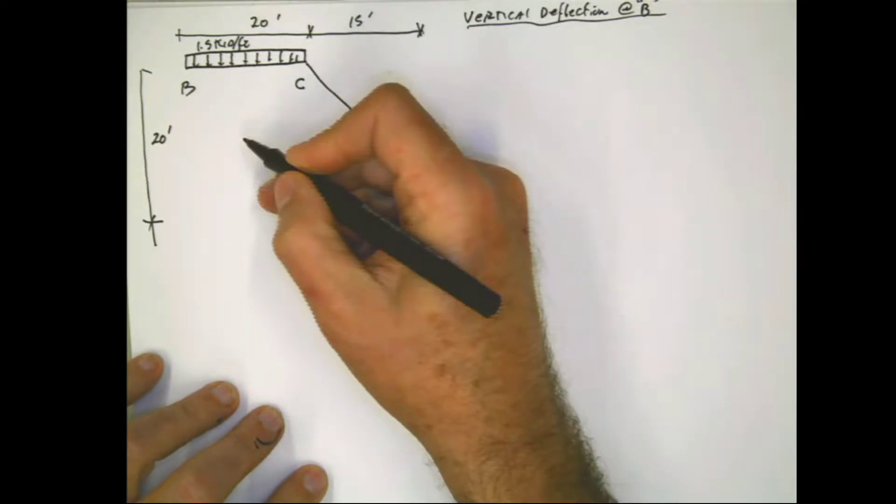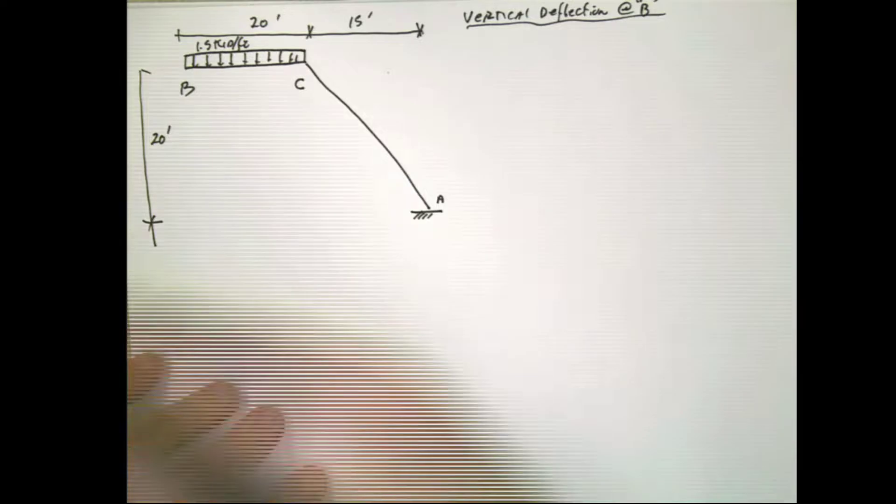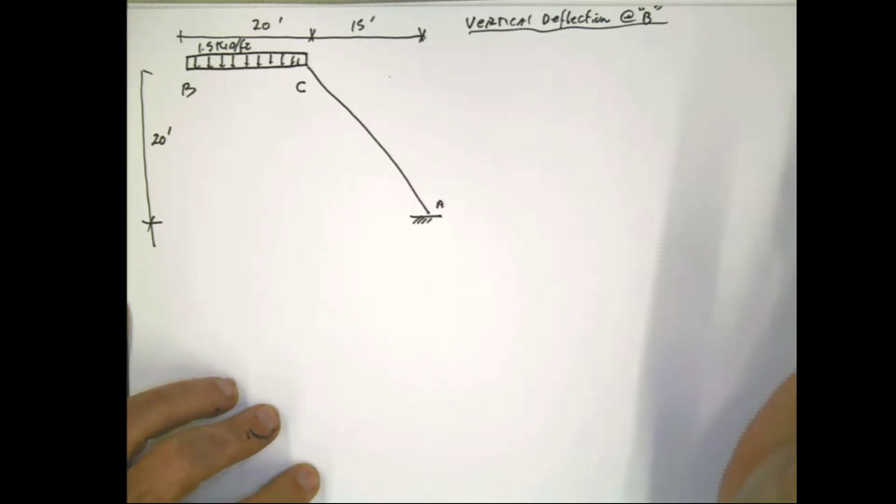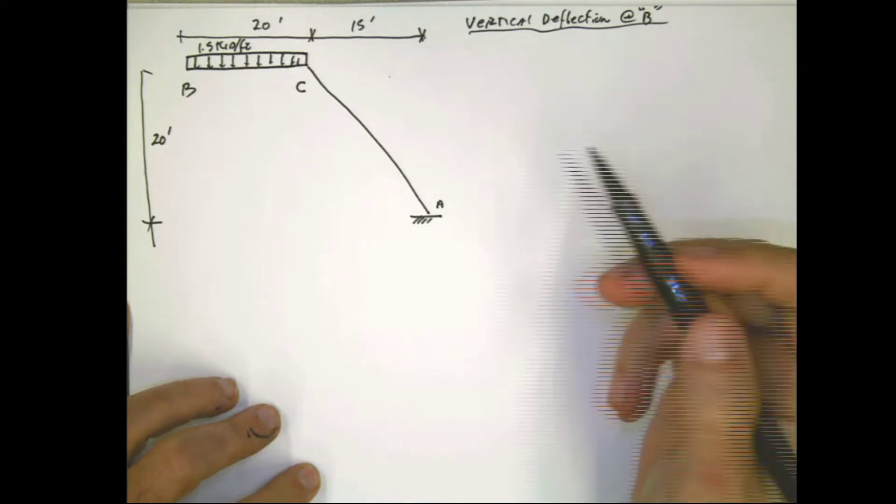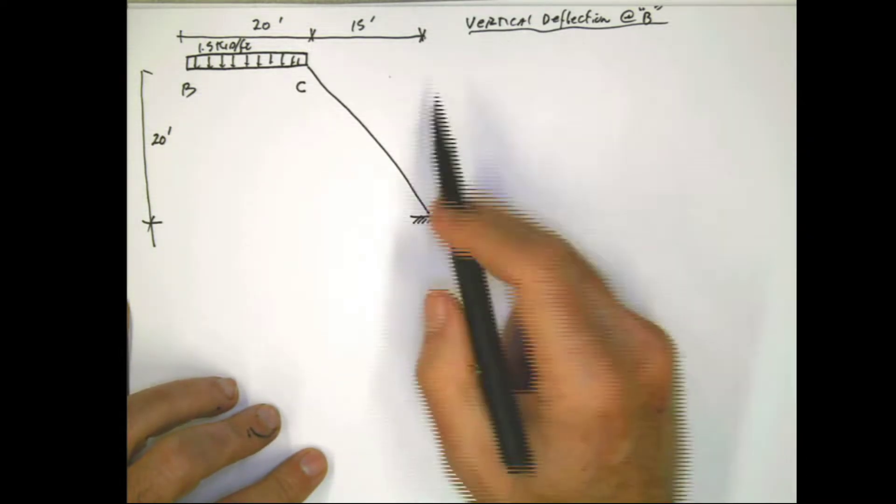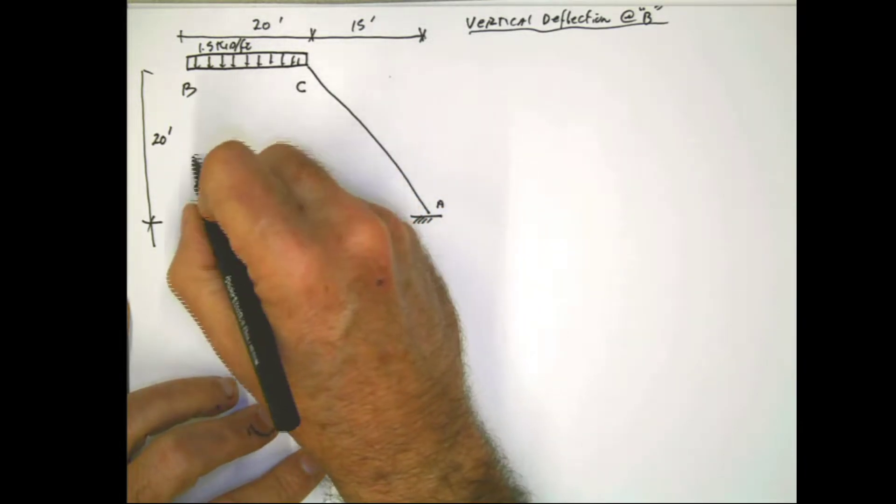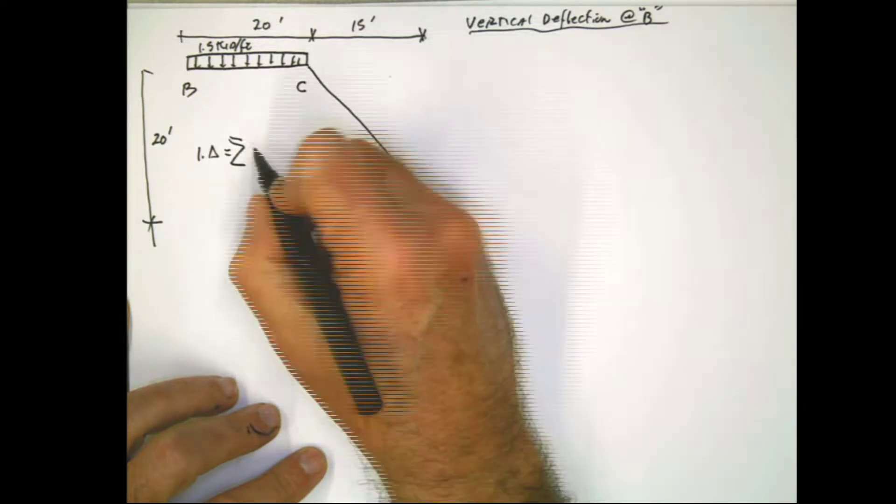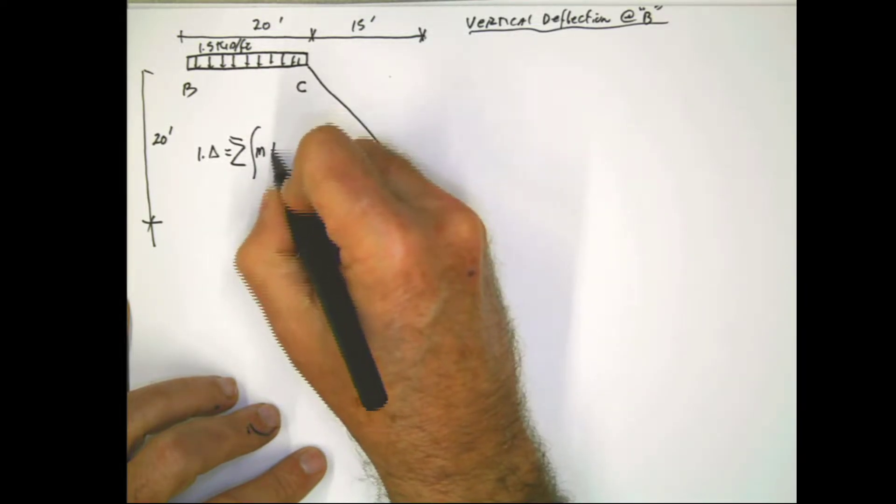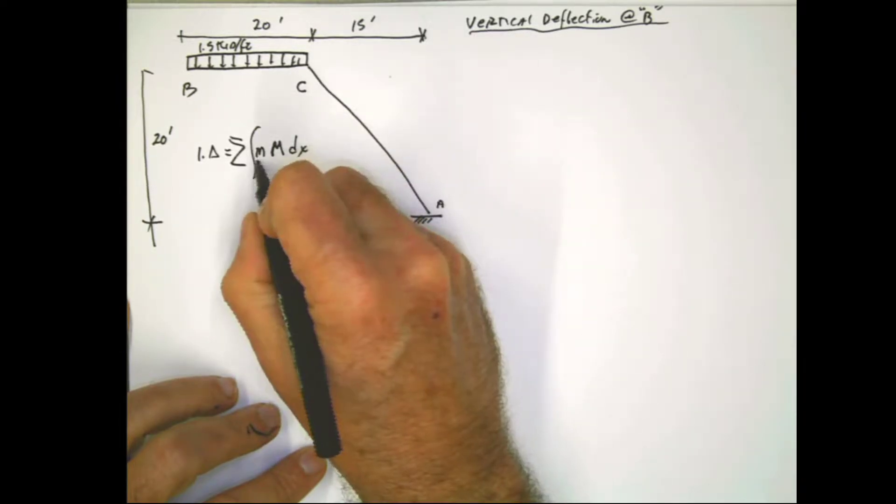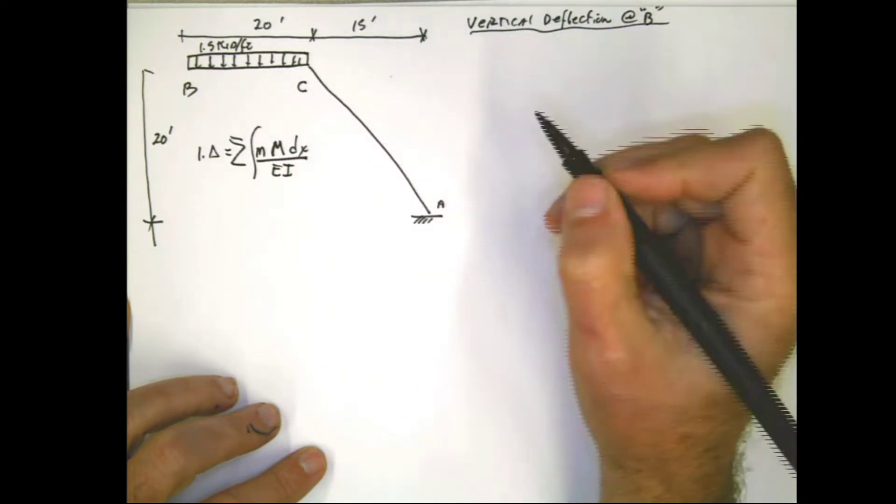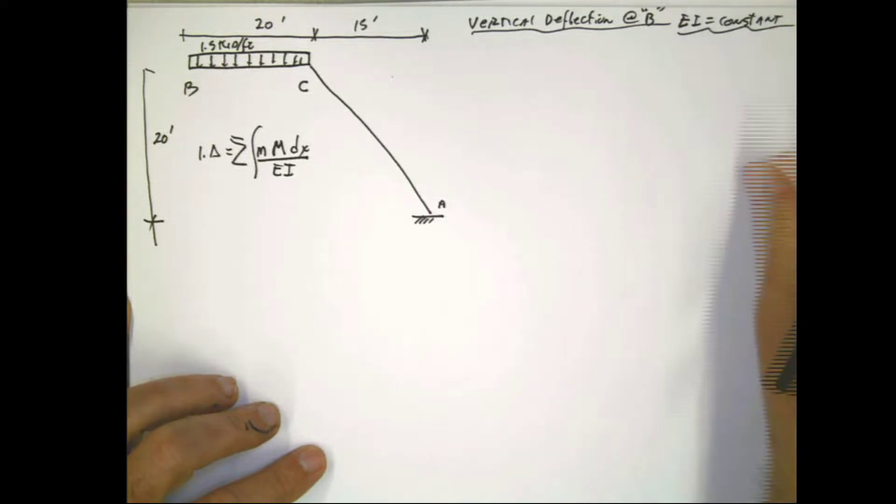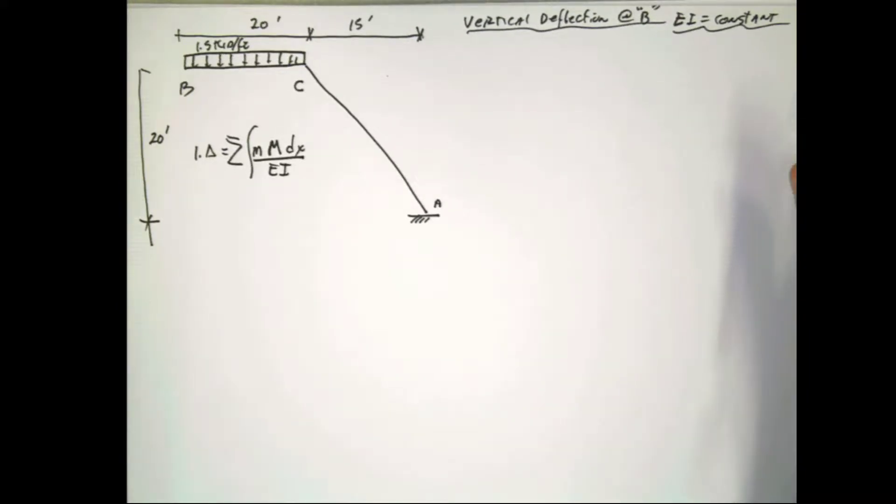We proceed. We consider real structure, virtual structure. At the end, we are considering only the moment, because I showed you in the previous video that the influence of the other axial and shear is not that much. Torsion also, if you have 3D. But for this particular type of thing, the influence of the moment is the biggest one. So what we have is that the external virtual work times real displacement has to be equal to the summation of all the internal effects. And we are only considering here the moment effect. The problem also states that EI is constant.